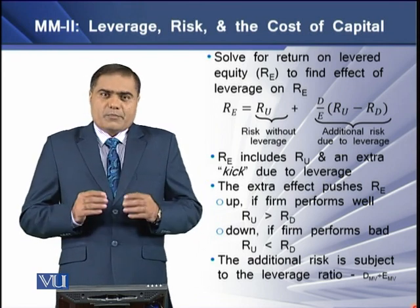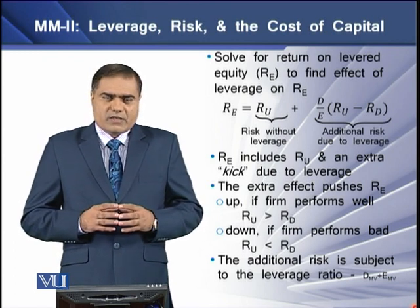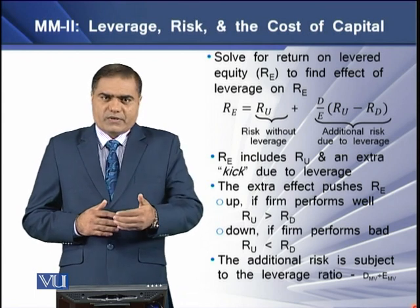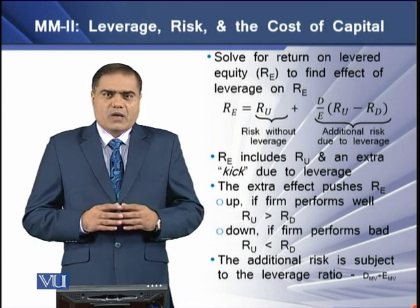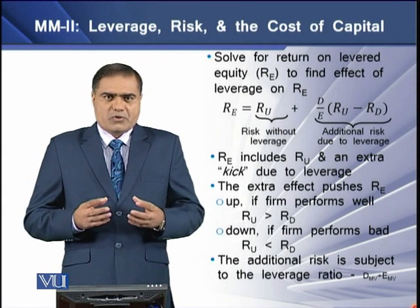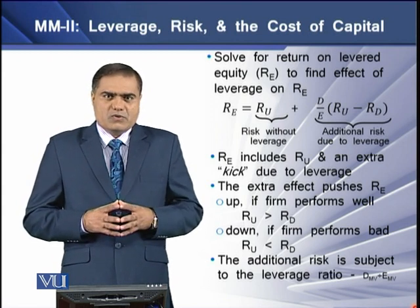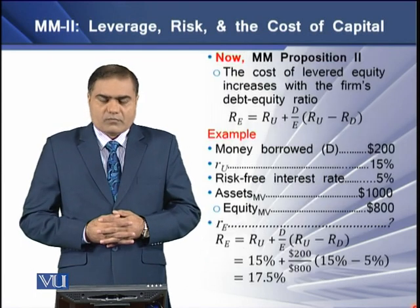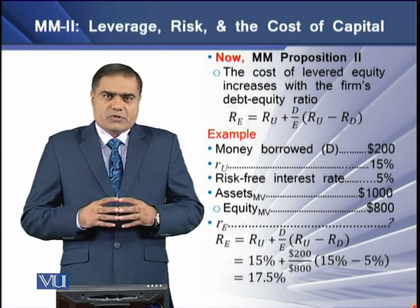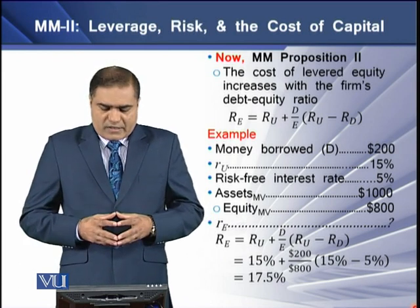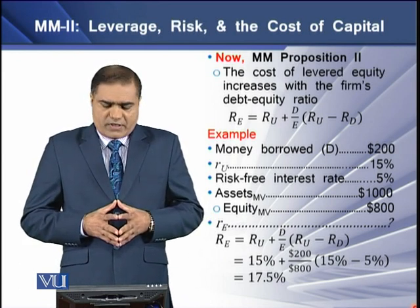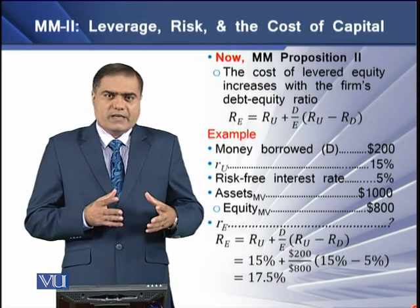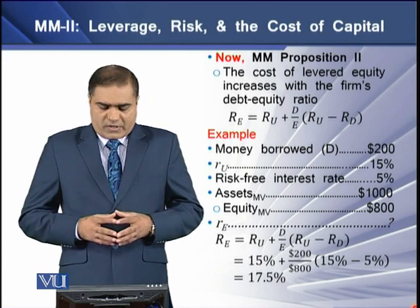The additional kick, or additional risk the firm takes by taking on leverage, is subject to the leverage ratio measured using the market values of the firm's debt and equity. Proposition 2 states that the cost of levered equity increases with the firm's debt-to-equity ratio — it is leverage that increases the firm's cost of equity.